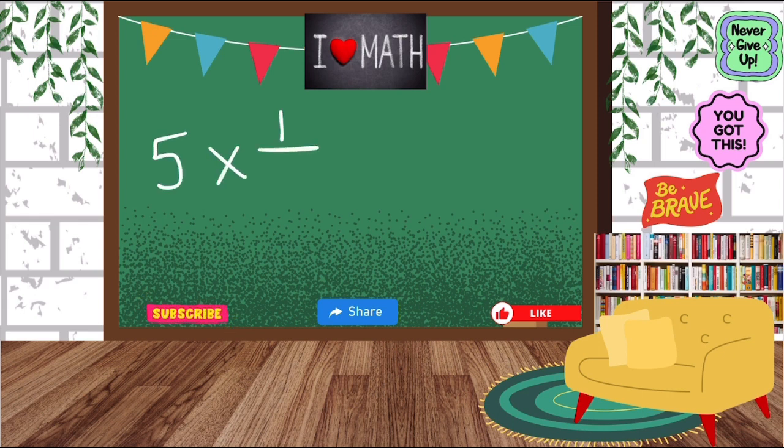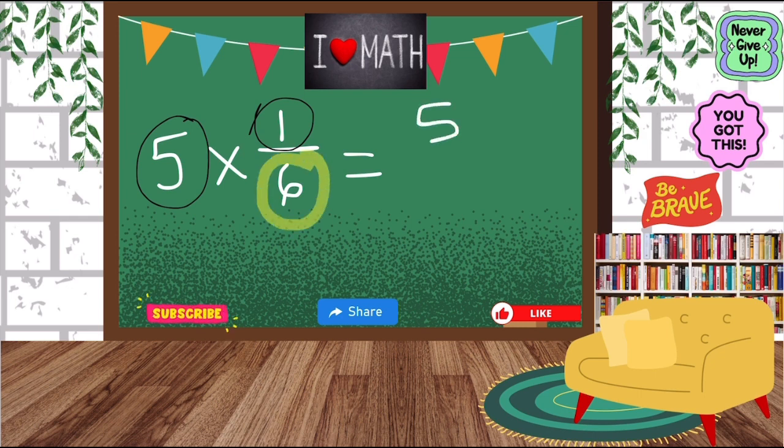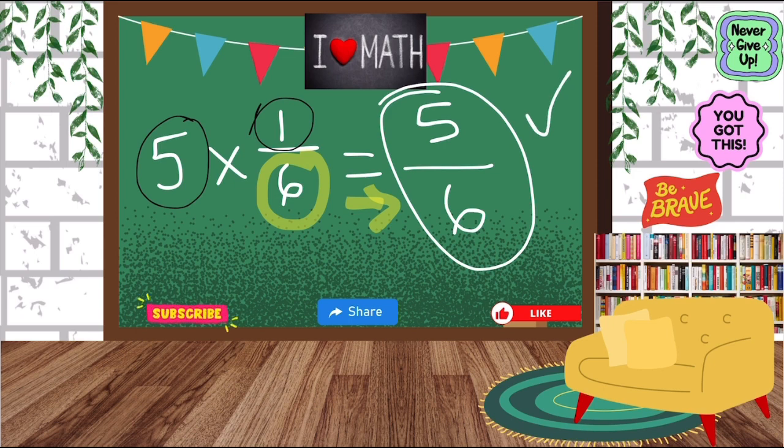So we have 5 times 1/6, right? So when you're multiplying a whole number by a fraction, you just multiply the whole number and the numerator and that's it. So 5 times 1 is 5 and then the denominator which is 6, that stays the same. It does not change. So we're just going to bring that right on over and our final answer is going to be 5/6. And that's it guys.